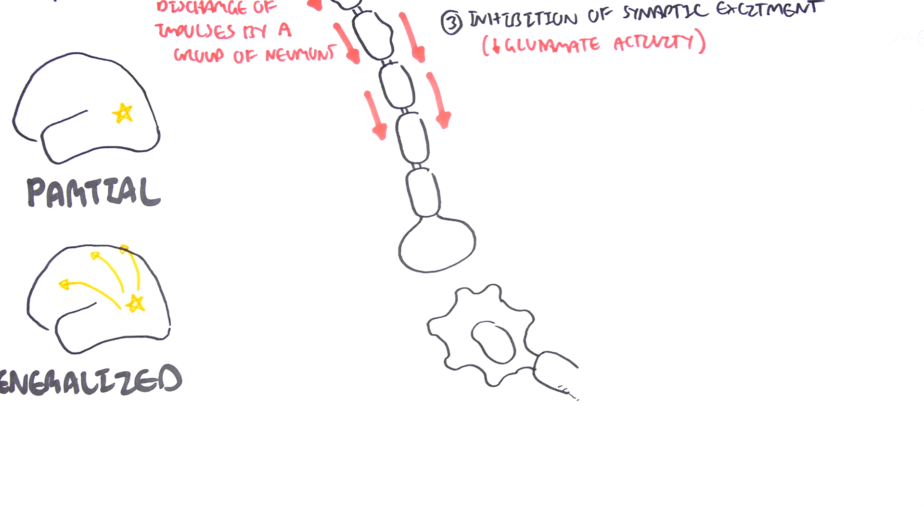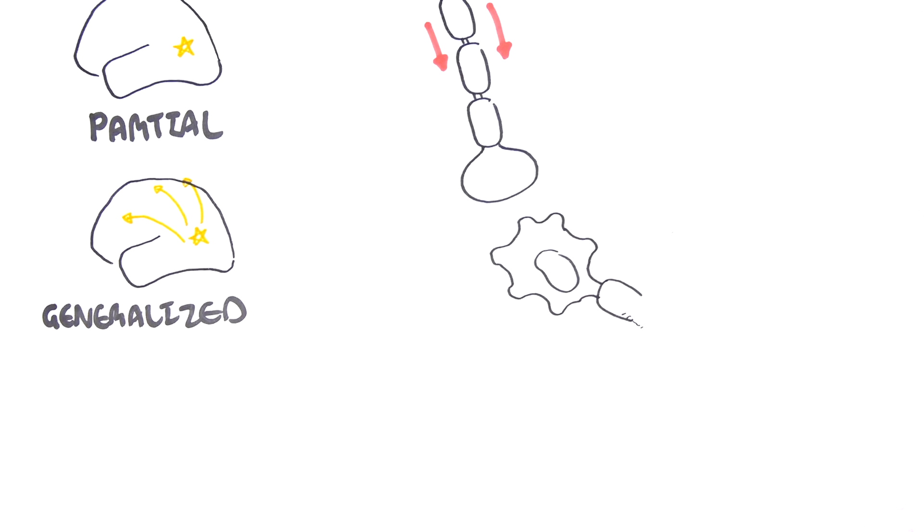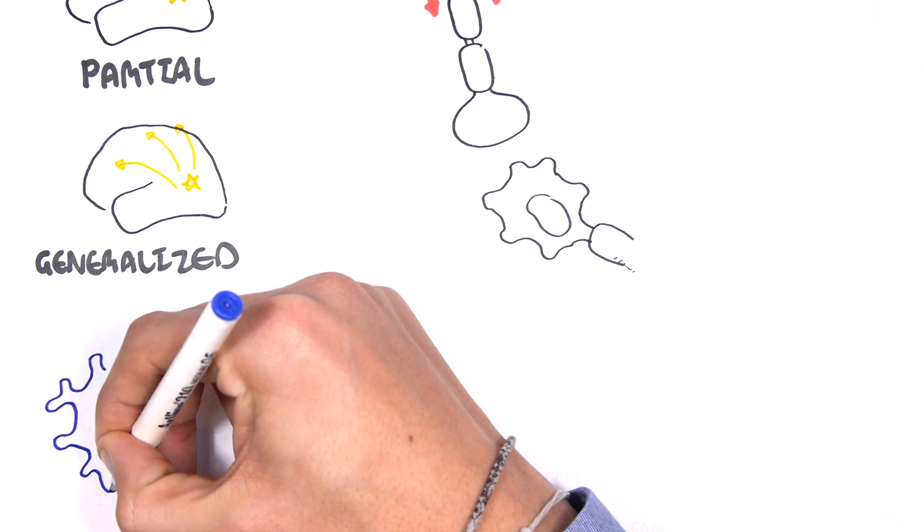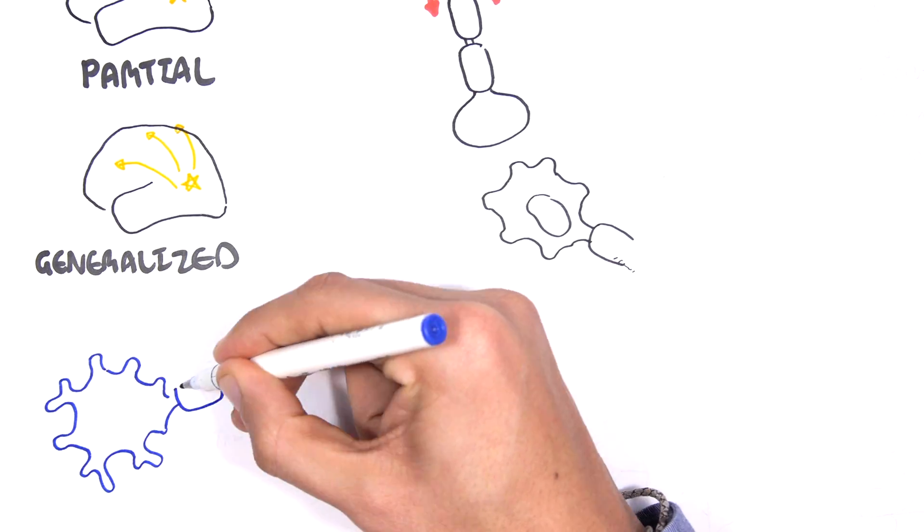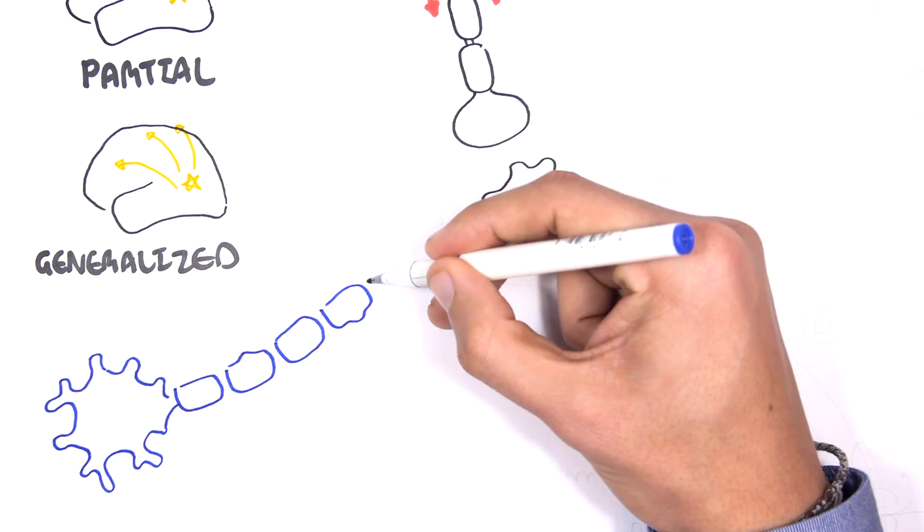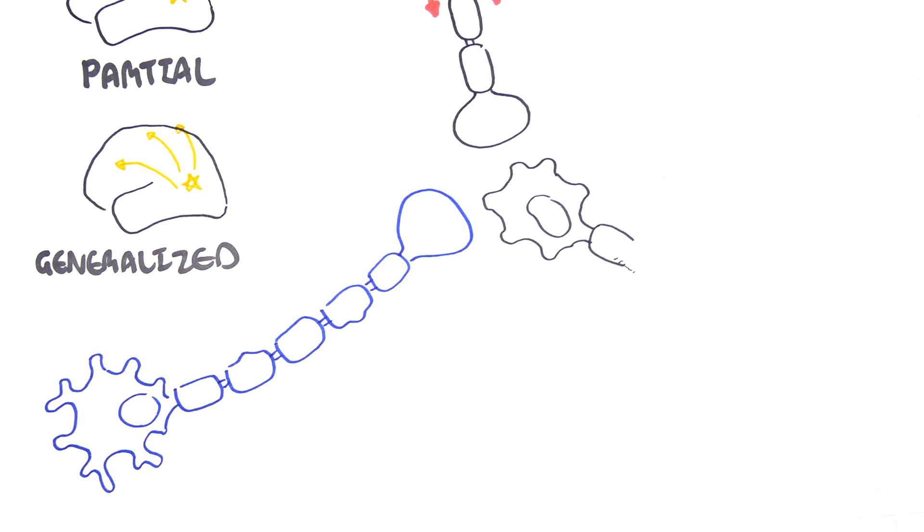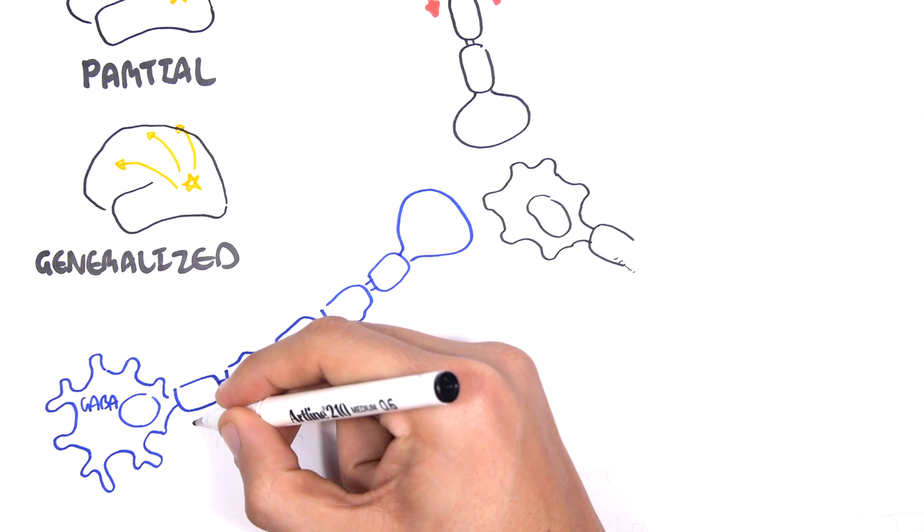The glutaminergic neuron will stimulate this postsynaptic neuron. If this happens and hits a threshold, it will result in a seizure. Then you have this other neuron in blue, which is an inhibitory neuron that releases GABA.